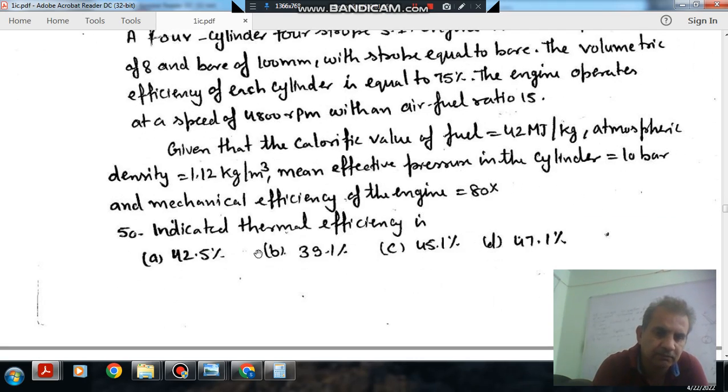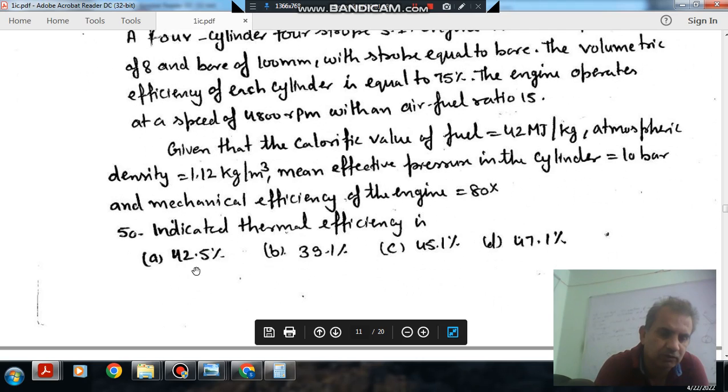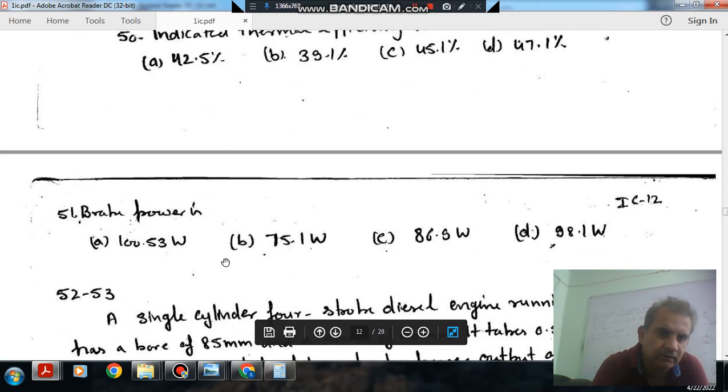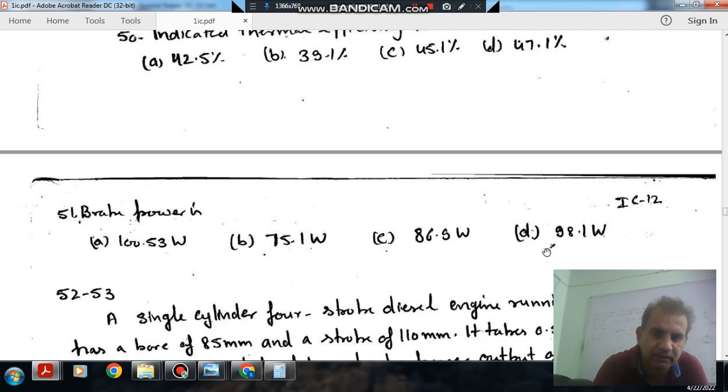The indicated thermal efficiency is: (a) 42.5%, (b) 39.1%, (c) 45.1%, (d) 47.1%. The brake power is: (a) 100.53 kW, (b) 75.1 kW, (c) 86.9 kW, (d) 98.1 kW.